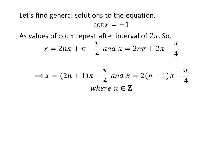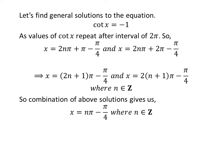Further simplification gives the general solutions as expressions of the form 2 times n plus 1 times pi minus pi upon 4. Since 2n and 2n+1 together cover all even and odd integers, their union is the set of all integers. Therefore, the general solution to the equation is n times pi minus pi upon 4, where n is any integer.